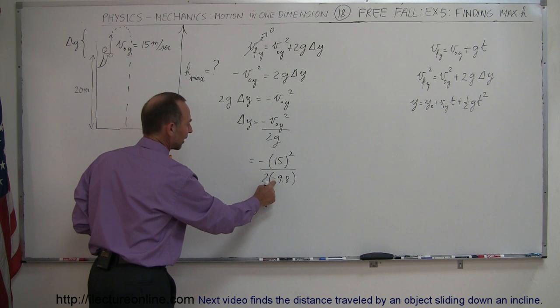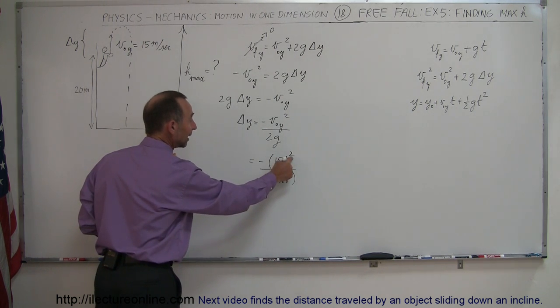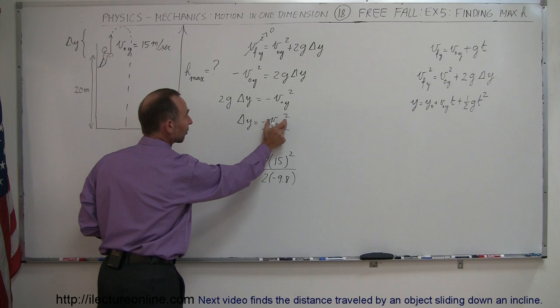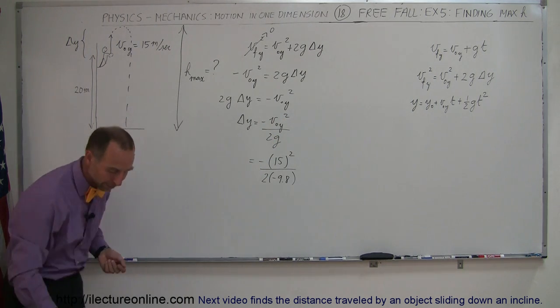Notice that this negative will cancel out that negative and this is not affected by the squaring V's initial Y. This square only applies to the V, not to the negative sign.